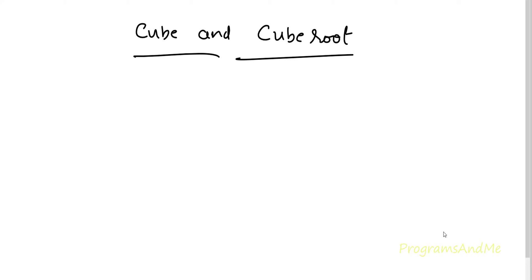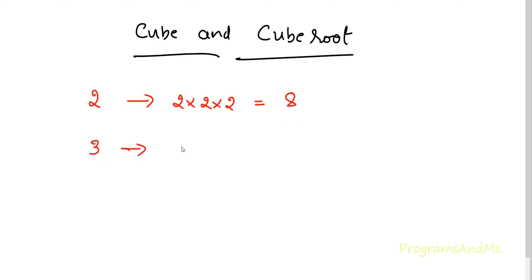If I want to find the cube of a number, I need to multiply that number thrice. For example, if I want to find the cube of 2, I multiply 2 thrice and I get 8 — so 8 is the cube of 2. If I want the cube of 3, then 3 × 3 × 3 = 27, and 27 is the cube of 3.